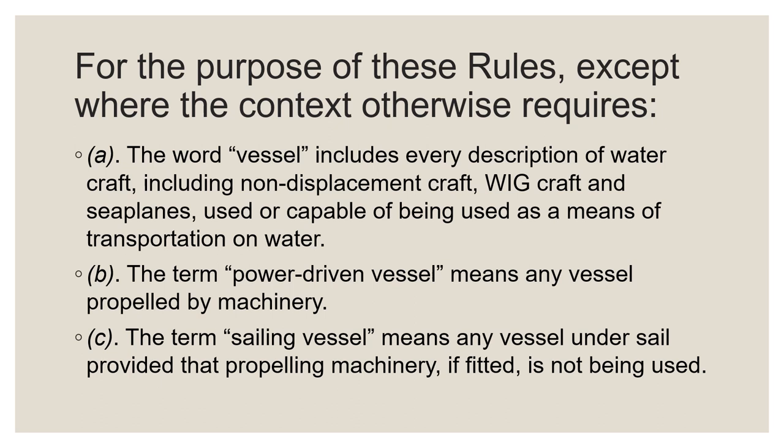Vessels propelled by machinery as well as any other means of propulsion are considered to be power-driven vessels. A day shape is required for most of these vessels using both sails and machinery for propulsion. Part C focuses on sailing vessels — vessels using only their sails for propulsion are included in this definition even though they may be fitted with an engine. Operation of the engine to generate electricity or heat water does not make the sailing vessel a power-driven vessel, so long as the propeller is not engaged. Rule 18 and Rule 12 address the responsibilities and privileges of sailing vessels.